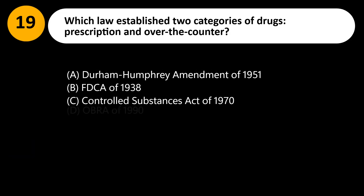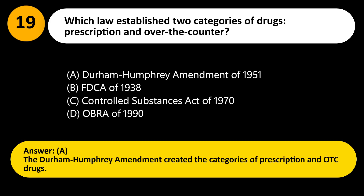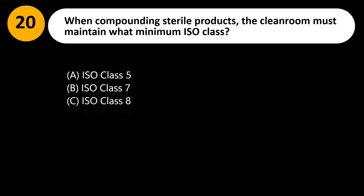Which law established two categories of drugs — prescription and over-the-counter? A. Durham-Humphrey Amendment of 1951. B. FDCA of 1938. C. Controlled Substances Act of 1970. D. OBRA of 1990. Answer: A. The Durham-Humphrey Amendment created the categories of prescription and OTC drugs.